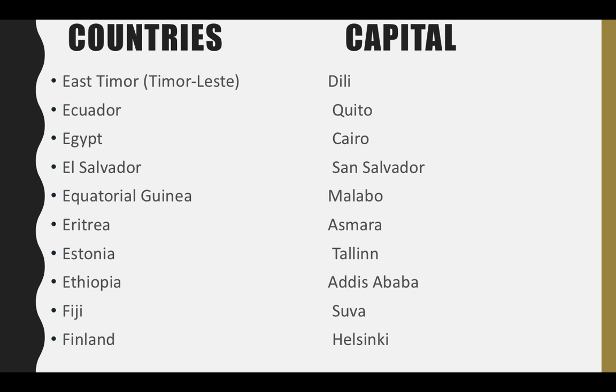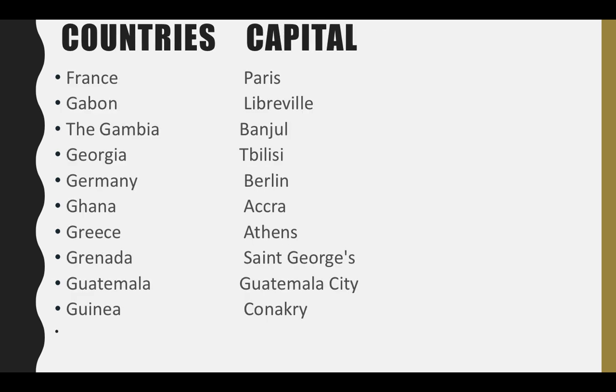Egypt — its capital is Cairo. El Salvador — its capital is San Salvador. Equatorial Guinea — its capital is Malabo. Eritrea — its capital is Asmara. Estonia — its capital is Tallinn. Ethiopia — its capital is Addis Ababa. Fiji — its capital is Suva. Finland — its capital is Helsinki. France — its capital is Paris.